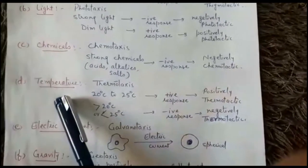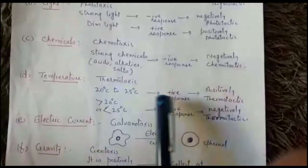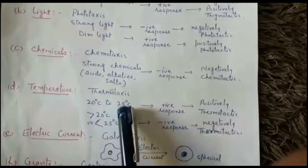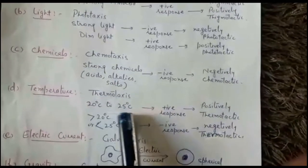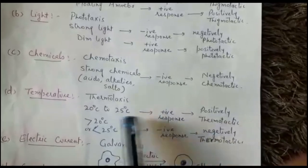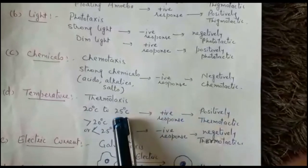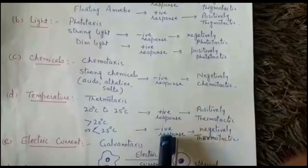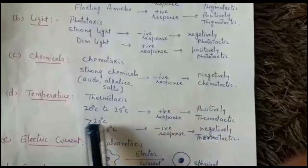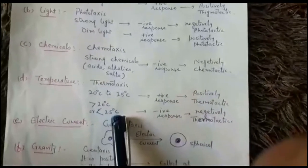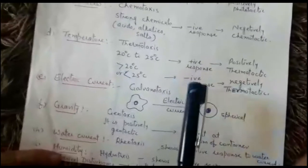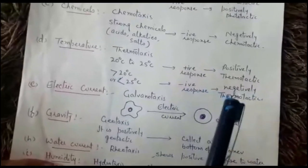The response to temperature is known as thermotaxis. Amoeba shows positive response to temperature ranging between 20°C to 25°C — this is the optimum temperature for its growth, so it is positively thermotactic to this range. It shows negative response to temperatures below 20°C or above 25°C, so it is negatively thermotactic to those ranges. Amoeba dies at 40°C.